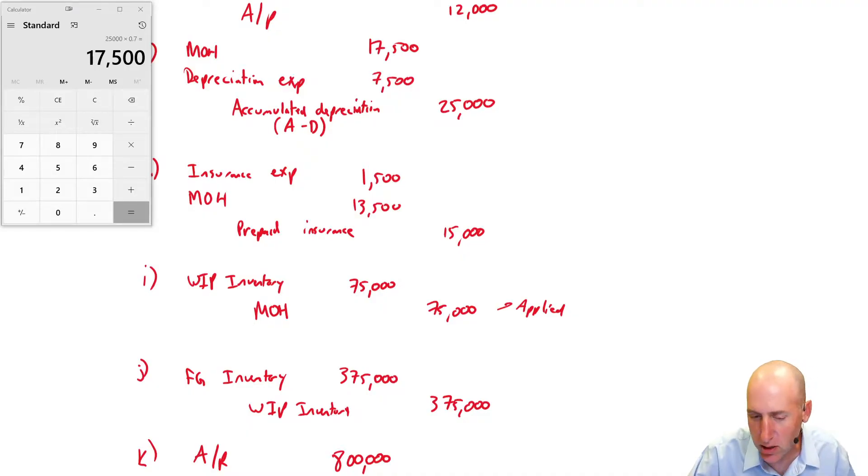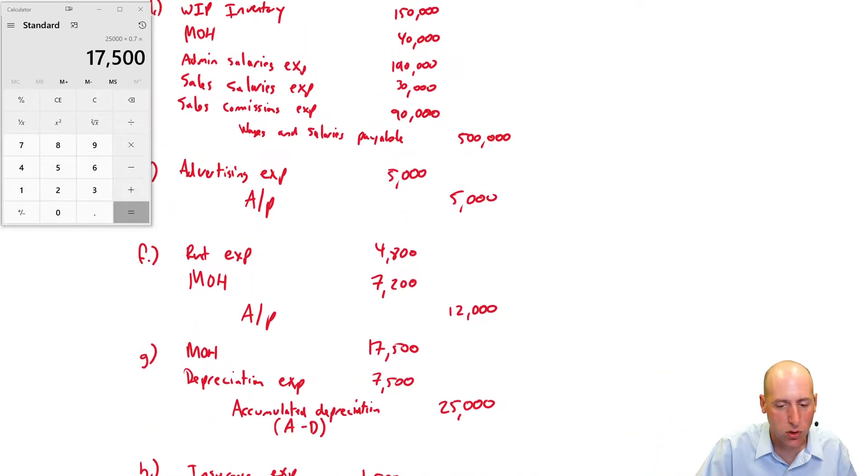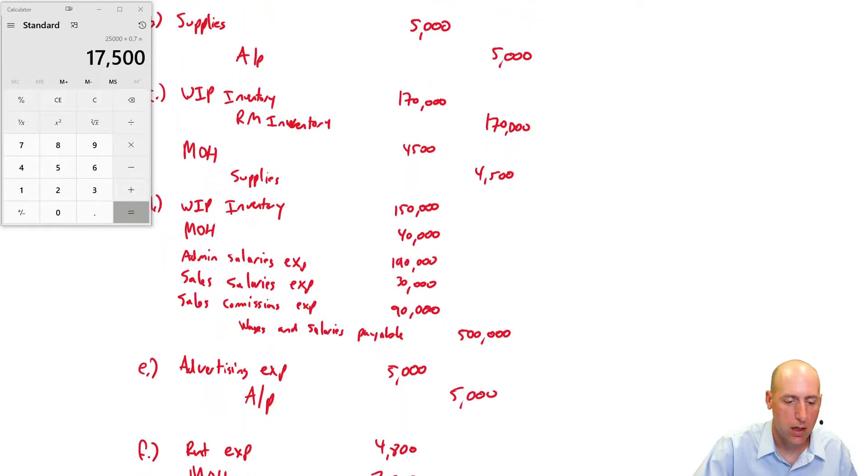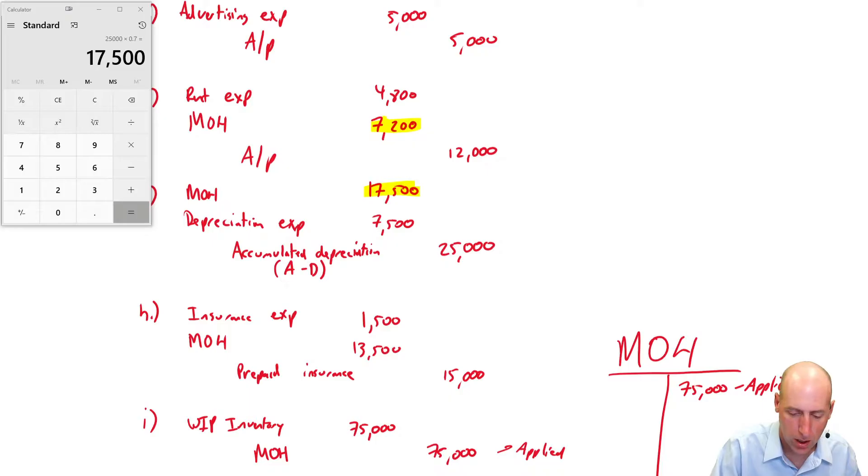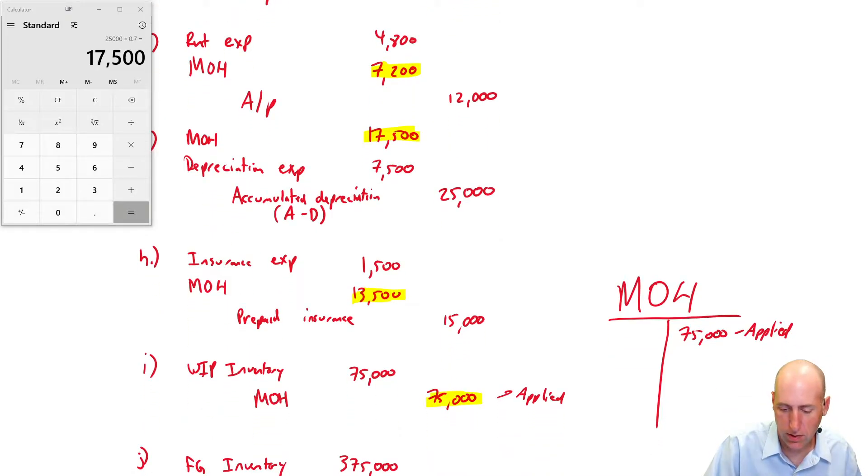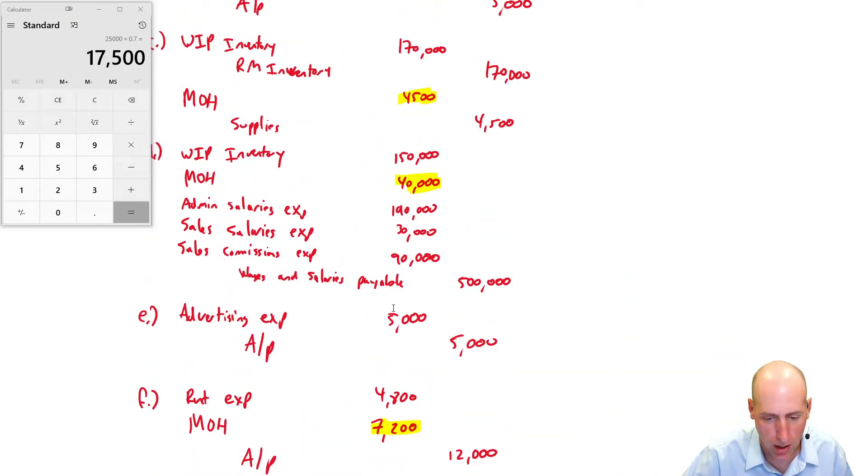So let's make a little T-account for MOH, and I think it's going to help solve this puzzle. So there's our overhead, and we know we have $75,000 in applied overhead, right? We credited MOH $75,000. Our debits are the actual MOH costs we incurred during the year. So we had $4,500 here. Let me just highlight these.